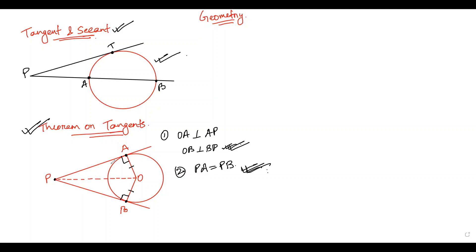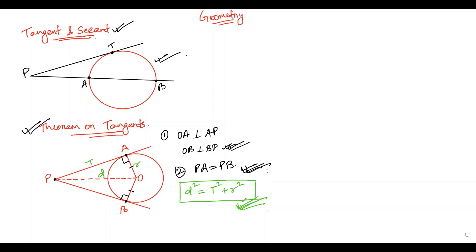Also in this case, if we assume the length of AP to be T, the length of OP to be D, and the radius OA to be R, then triangle OAP is a right-angle triangle and we can use Pythagoras theorem: D² = T² + R². We can use this relation directly whenever we have been given two of the three lengths and need to find the third.